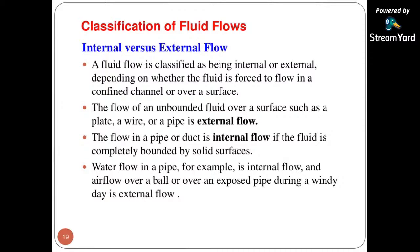For example, when water flows in a pipe it is internal flow, and airflow over a ball or an exposed pipe during wind is external flow. Flow over a surface where the top and bottom are not confined is external flow, but flow in a pipe where the flow is confined on all sides is considered internal flow.